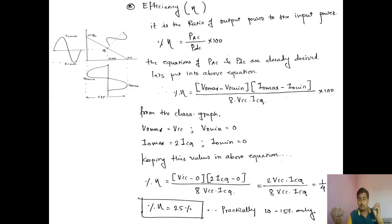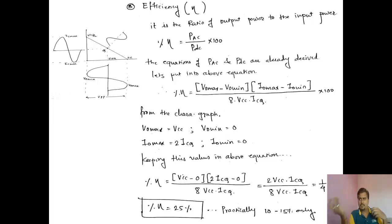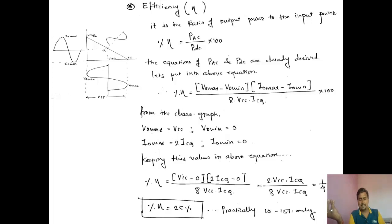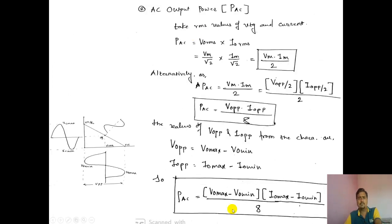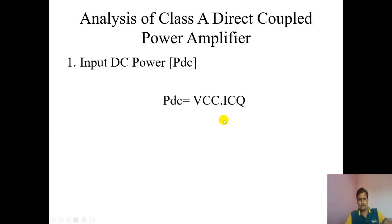The third parameter is efficiency. Efficiency equals output power divided by input power, multiplied by 100. For example, if I take 10 watts and generate 6 watts, efficiency is 6/10 × 100 = 60%. For this amplifier, efficiency = PAC / PDC × 100. The equation for PAC is (VO max − VO min)(IO max − IO min) / 8, and PDC = VCC × ICQ.